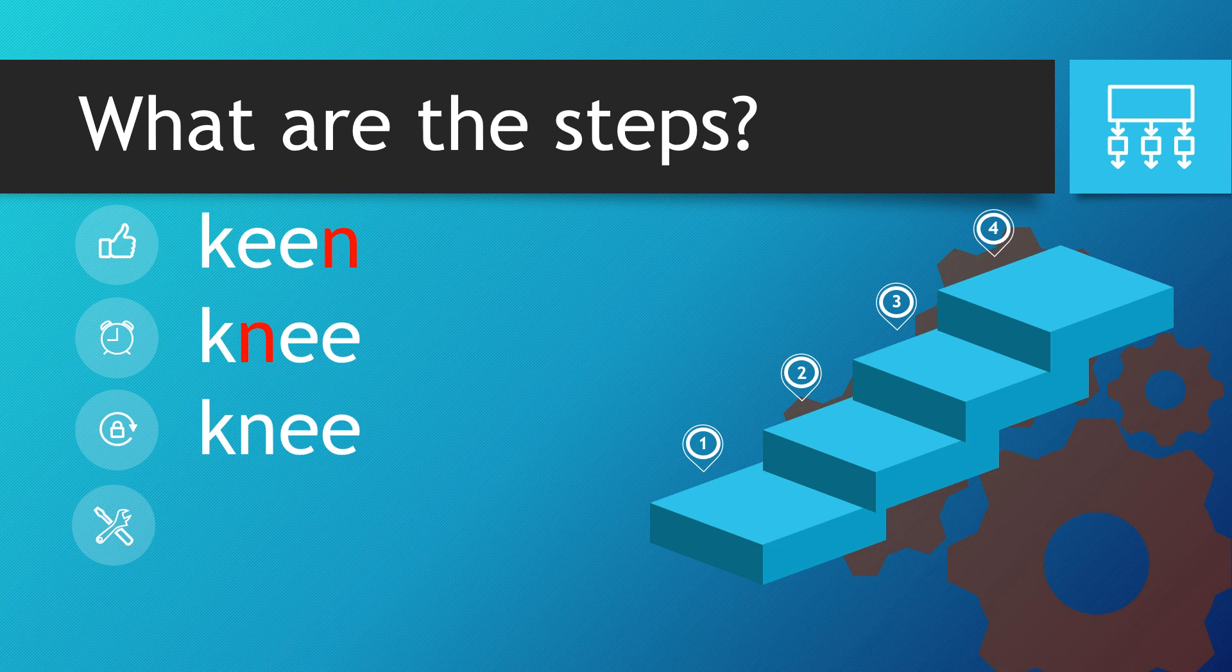So, what are the steps? Well, we take the word keen, but N is so keen she moves up to second place, so the N becomes second and we get the word knee.